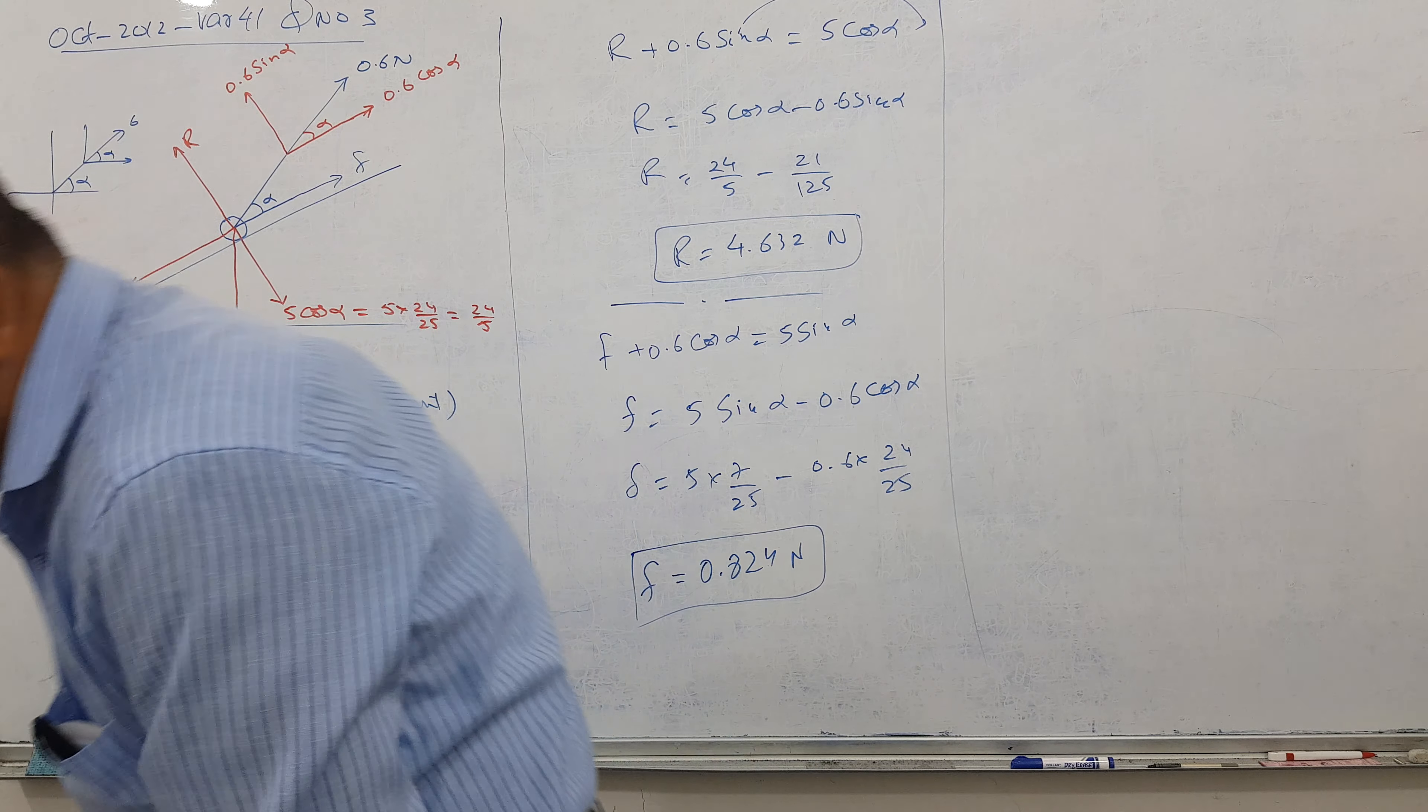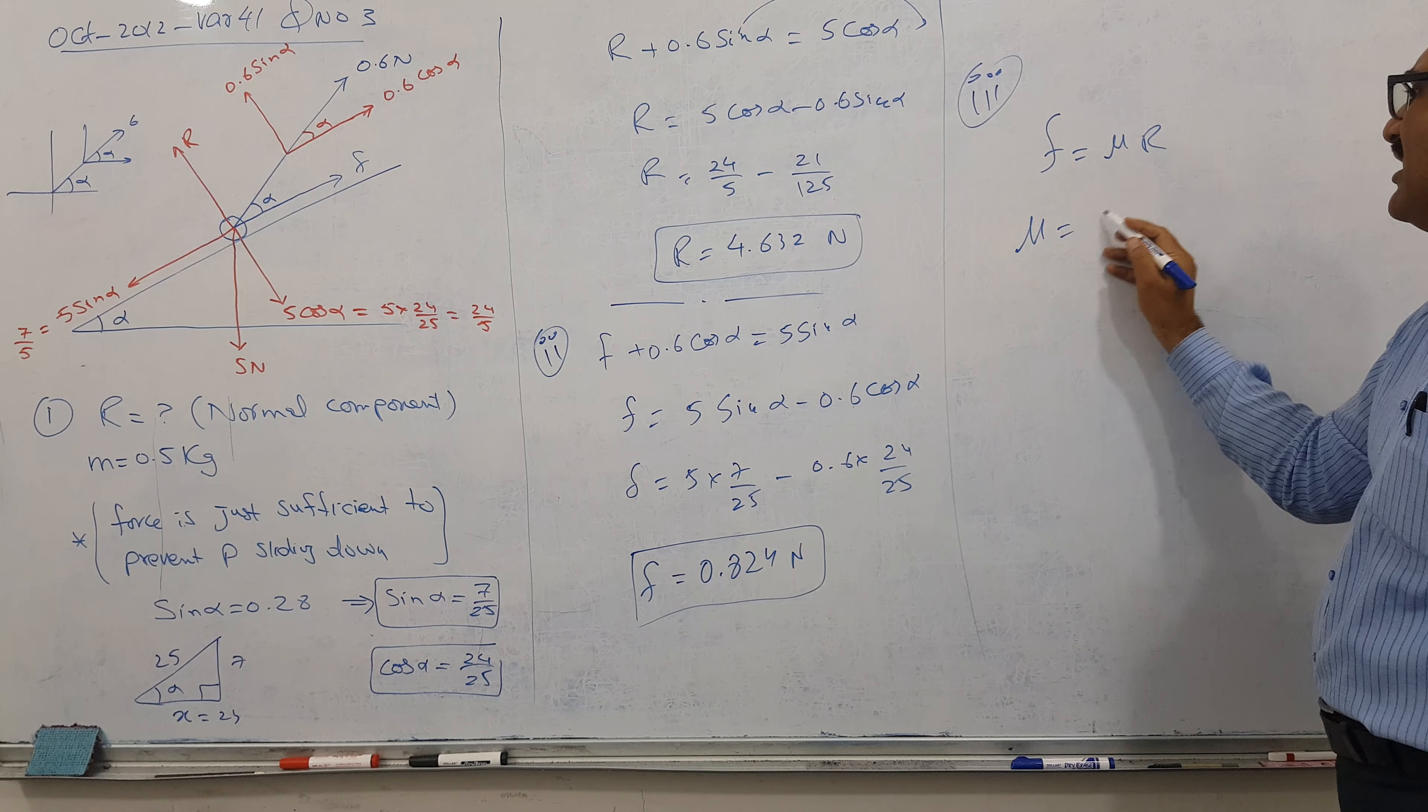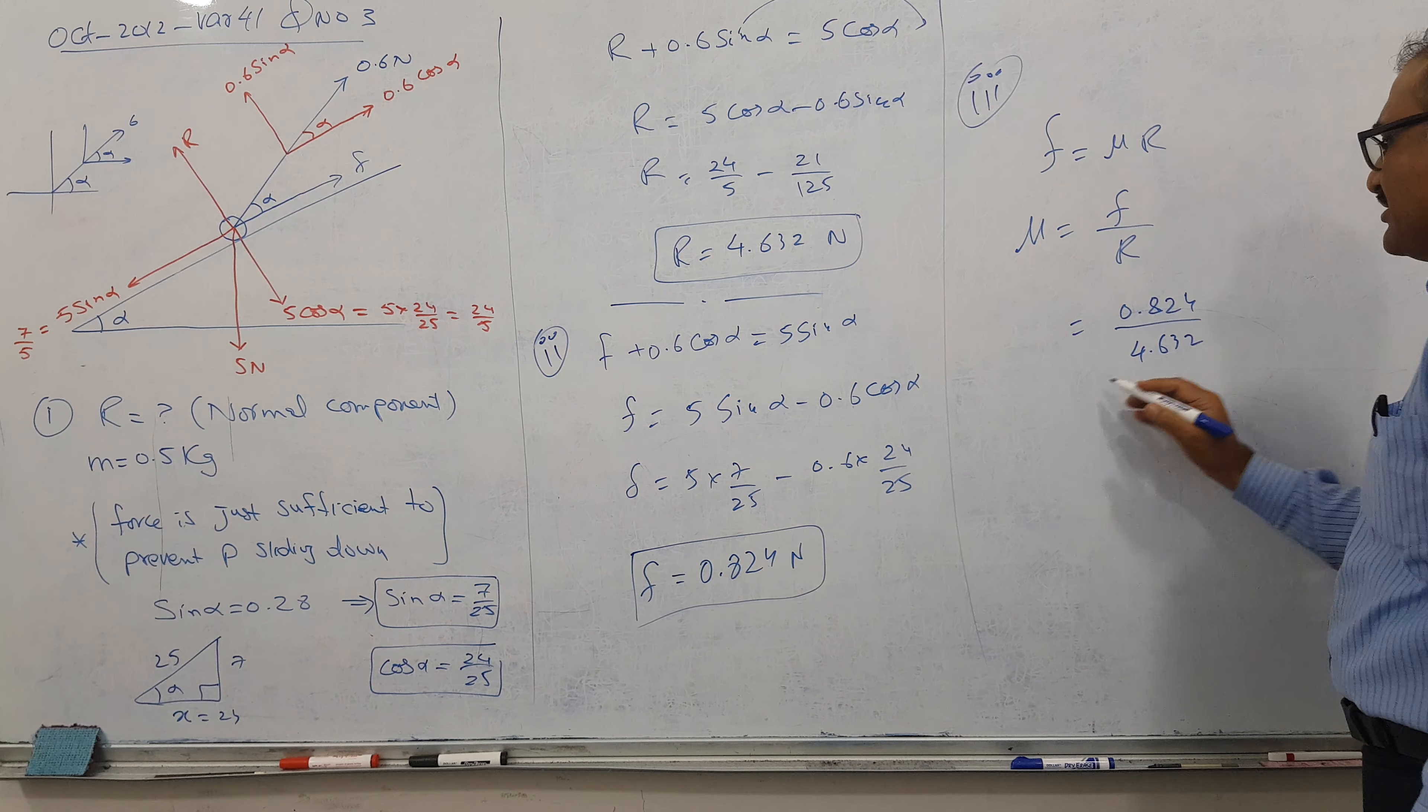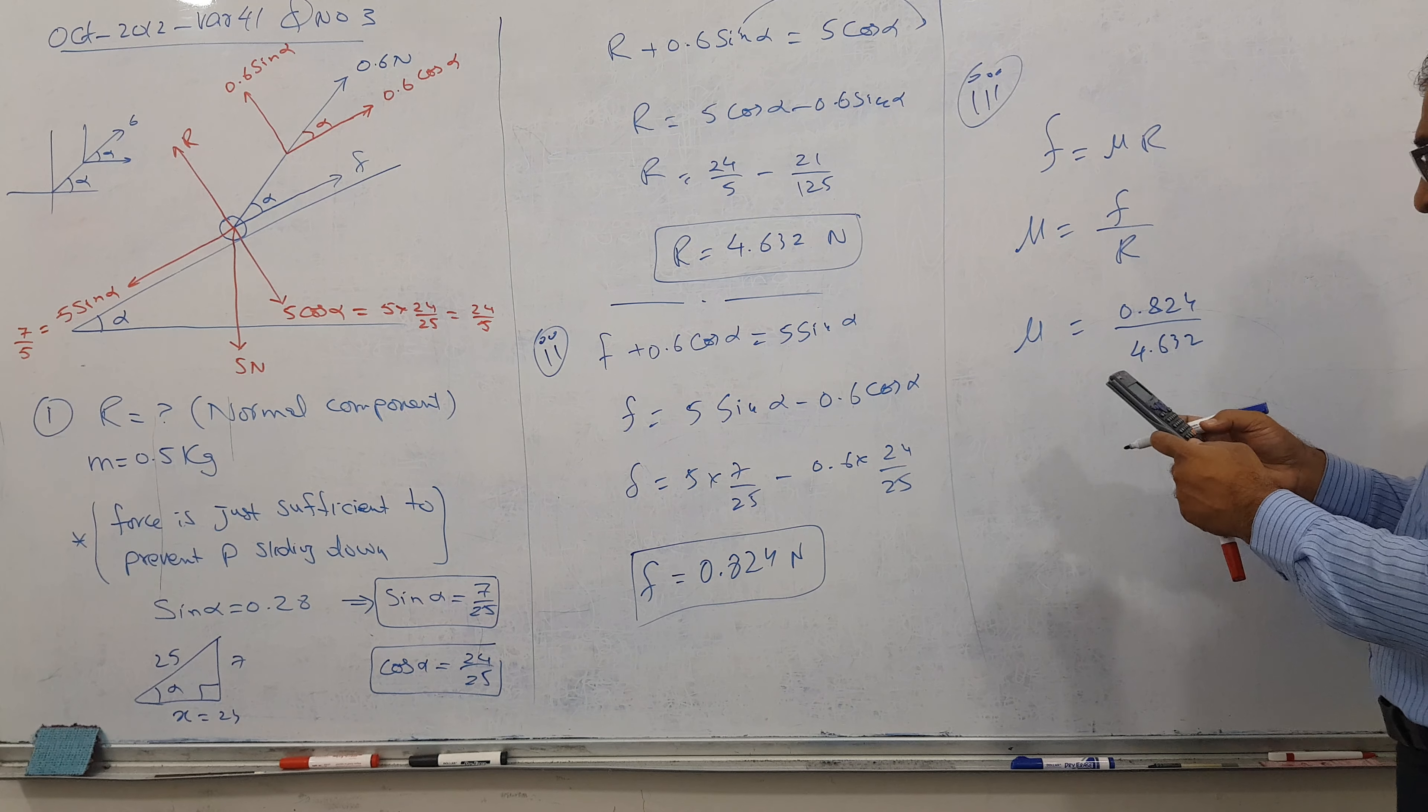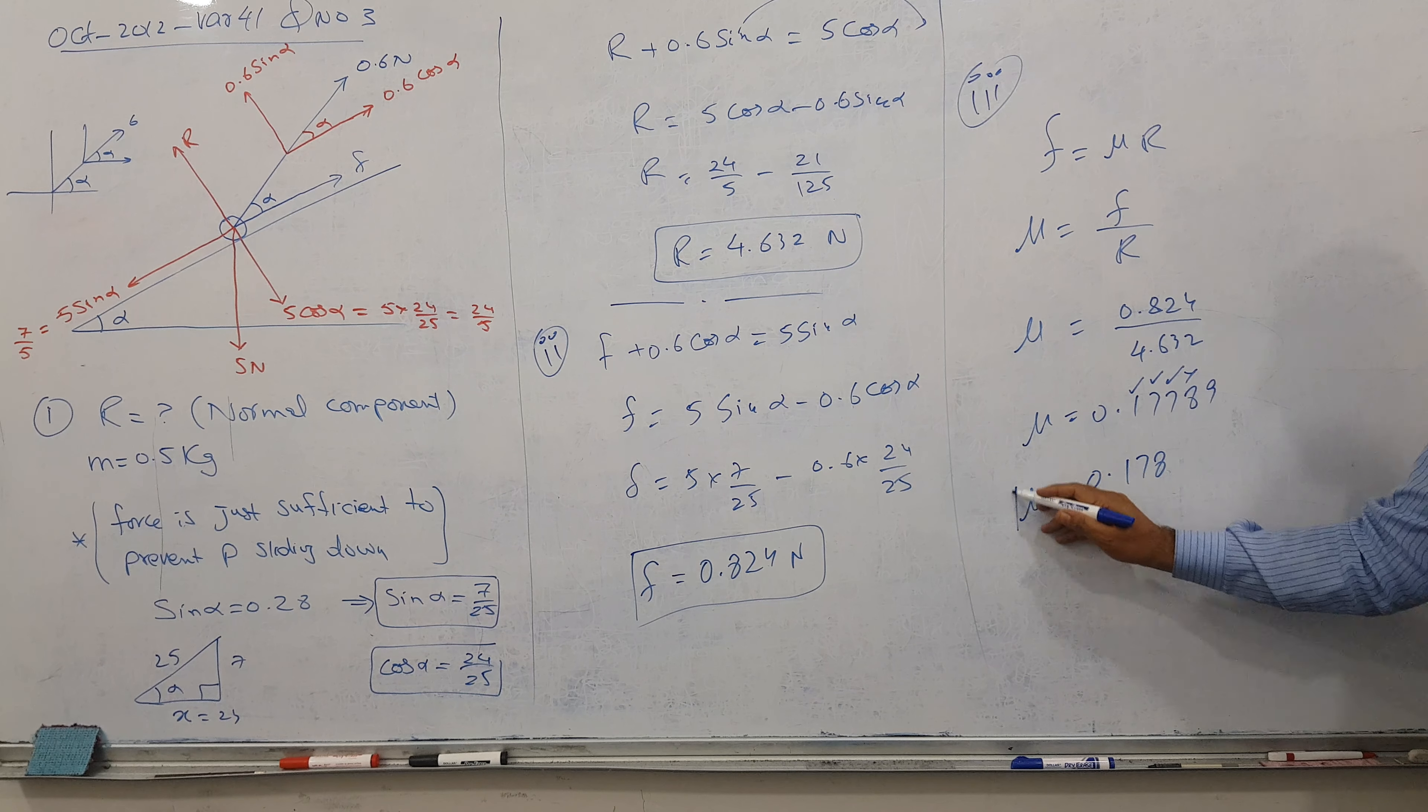I think you got the same answer, right? Clear. Nice, let's move. Last part, what is asking? Find coefficient. It is a very simple part. This is part number 3. You know F is equal to mu R. I am looking for mu, so F upon R, and F is 0.824 by 4.632. Answer is coming, mu is 0.17789, but I need always 3 significant figures, so 0.178 is our mu value.